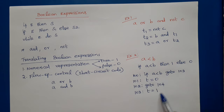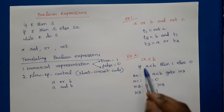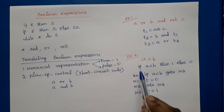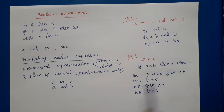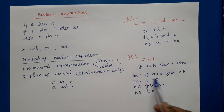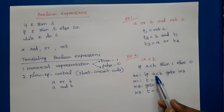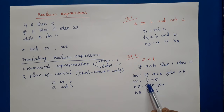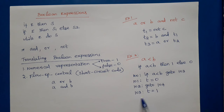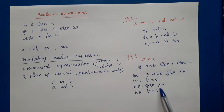So these are the four three-address statements for A < B. If A < B is true, goto 103 where T is assigned 1. If the condition is false, in the next statement T is assigned 0, then goto 104 is performed so that we skip the true-branch statement. We will see these operations in the syntax-directed translation.